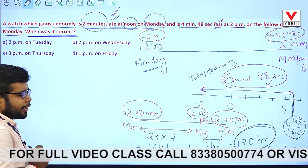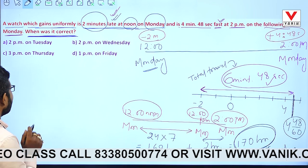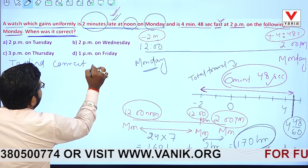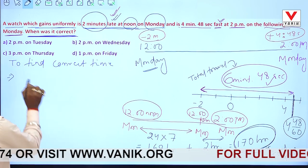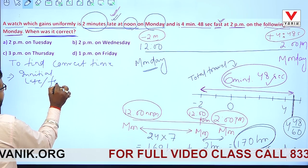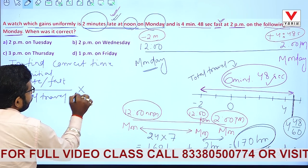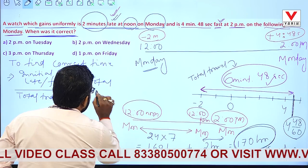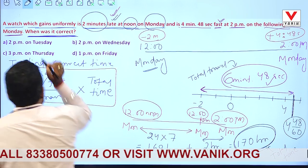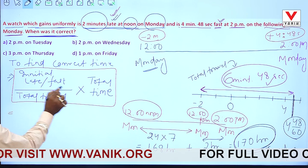When a question like this is given, there is a direct formula. To find the correct time: take the initial late or fast value, divide it by the total travel (late to fast or fast to late), and multiply by the total time. That gives you how many hours after the start point the watch was showing the correct time.